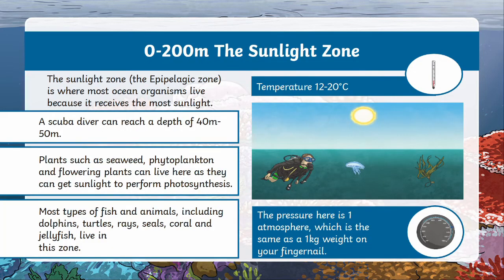First is the sunlight zone. This zone reaches about 200 meters below the surface of the ocean. The sunlight zone, also called the epipelagic zone, is where most ocean organisms live because it receives the most sunlight. The temperature in this ocean layer is the warmest at 12 to 20 degrees Celsius, and a scuba diver can reach a depth of about 40 to 50 meters. Different plants can live here as they get sunlight to perform photosynthesis. Most types of fish and animals including dolphins, turtles, rays, and seals live in this zone.